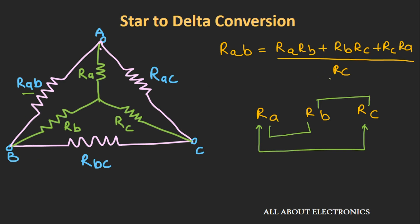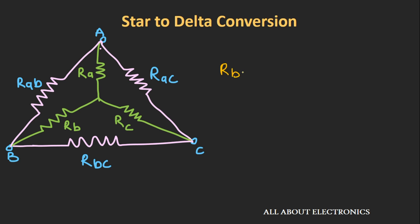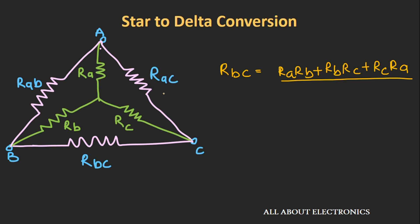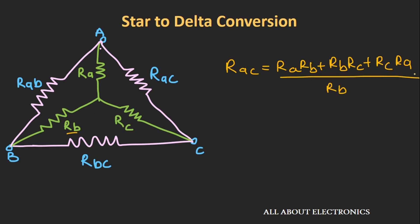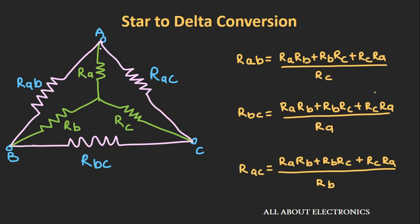For the denominator, write down the resistor which is at the opposite end of the resistor Rab. Resistor Rc is not connected to node A or B, so write down the resistor not connected to the nodes to which Rab is connected — that is Rc. Likewise, you can write the expression for Rbc as (Ra·Rb + Rb·Rc + Rc·Ra) divided by Ra, since Ra is at the opposite end of Rbc. In this way we get three expressions for the star-to-delta conversion.